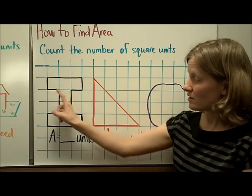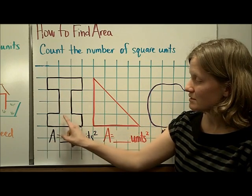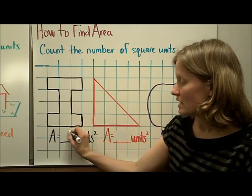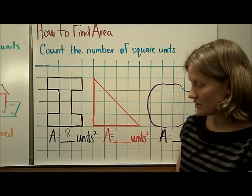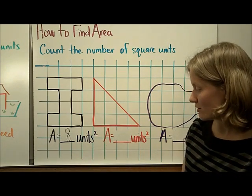One, two, three, four, five, six, seven, eight. This shape, this eye, covers eight square units, and notice that I have written units squared. That little two there you read as squared.